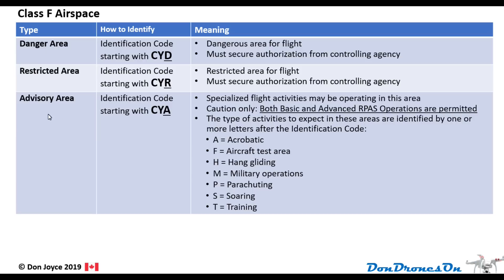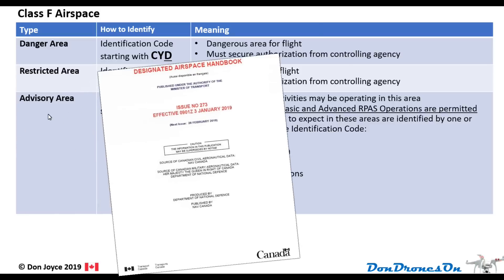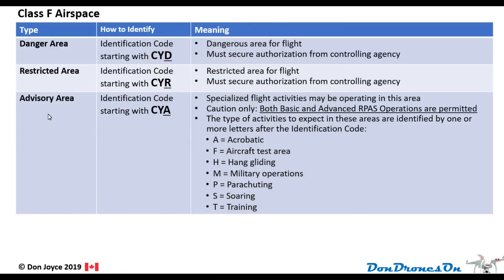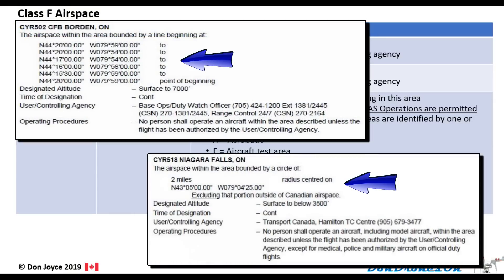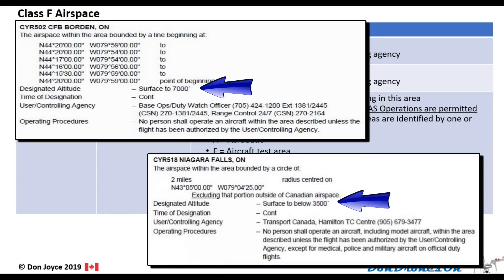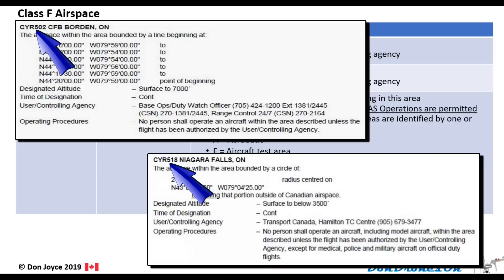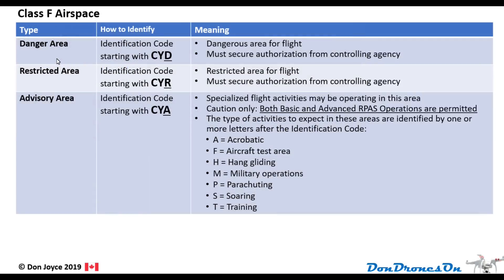Class F airspace is a strange grouping of three kinds of special use areas of airspace that exist only in Canada. Mention class F to an American pilot and they'll think you're mental, or Canadian, or both. All three types are defined in the Designated Airspace Handbook, or DAH, which identifies every single one by exact location and altitude. Each of the 169 individual areas has an identification number.